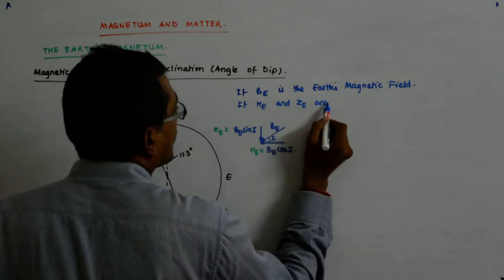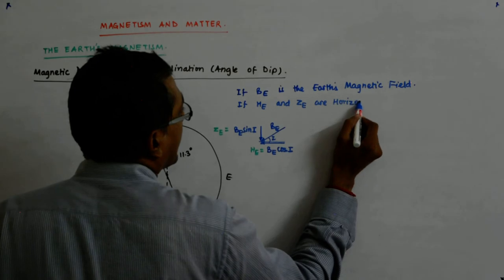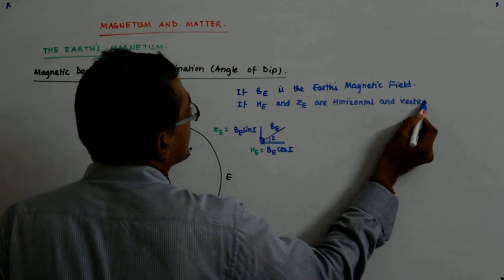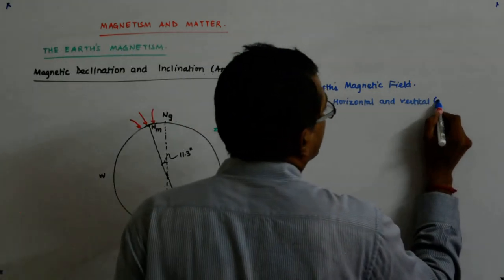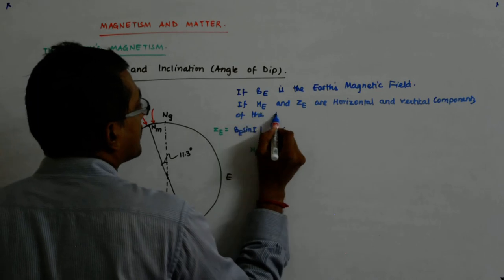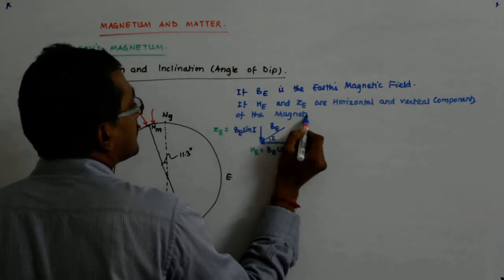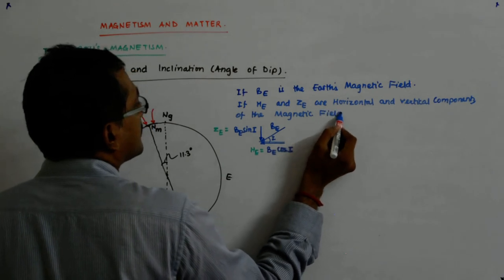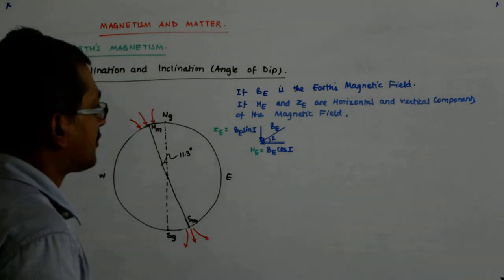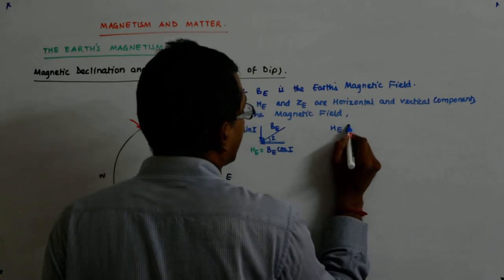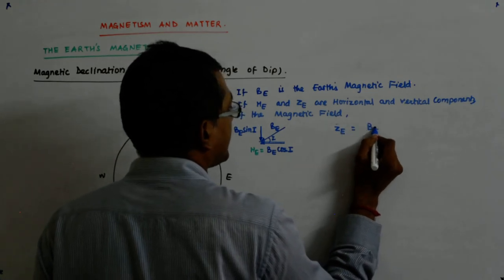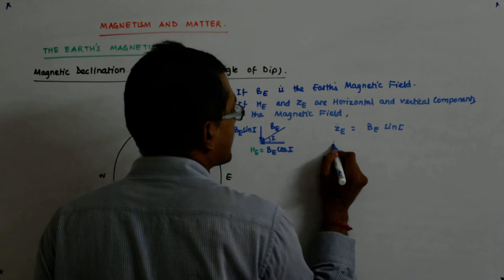If HE and ZE are horizontal and vertical components of the magnetic field, then we have just seen that ZE is equal to Be sine I and HE is equal to Be cos I.